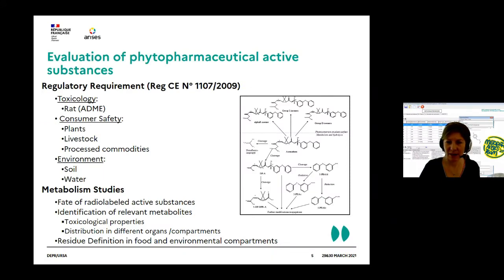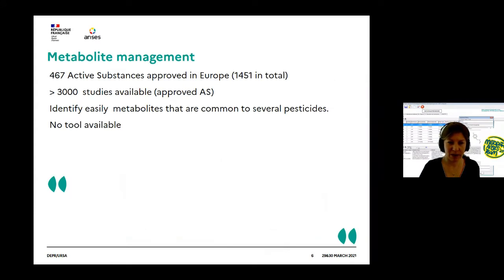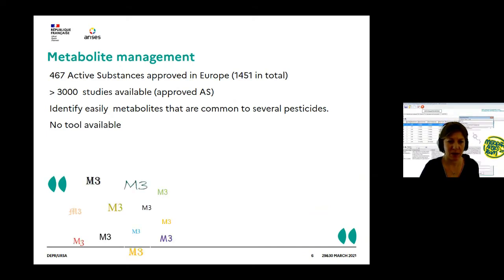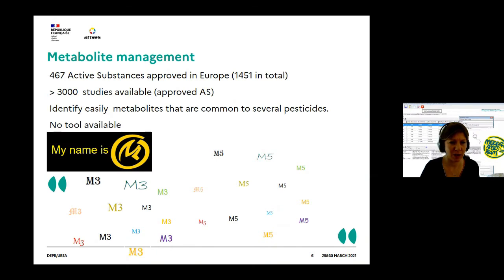In the framework of pesticide assessment, several kinds of metabolic studies have to be submitted to study the fate of active substance in rats, plants, livestock, rotational crops, soil or water. The goal is to identify the metabolic pathway of the active substance, to identify the relevant metabolites, and then to define the residue in food and environmental compartments. In Europe, there are more than 460 approved active substances, representing more than 3,000 metabolism studies. One of the main issues is to identify common metabolites to several pesticides — depending on the laboratory or company, the same metabolites could be named differently. This observation led to the development of Metapath.